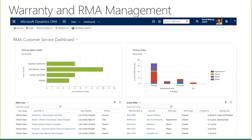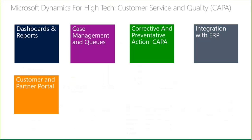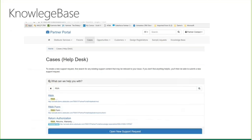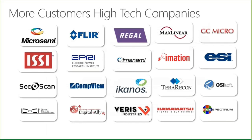We also built out an install-based record that allows you to track products sold to your customers by serial number, so when you're talking with that customer you can quickly look up the products they've purchased. The last example is around quality and customer service — supporting things like CAPA, which stands for Corrective and Preventative Action, to address repeated challenges with products or business processes discovered during an RMA process or a field service visit. We also leverage CRM portals to support customer self-service and knowledge base for high-tech customers.